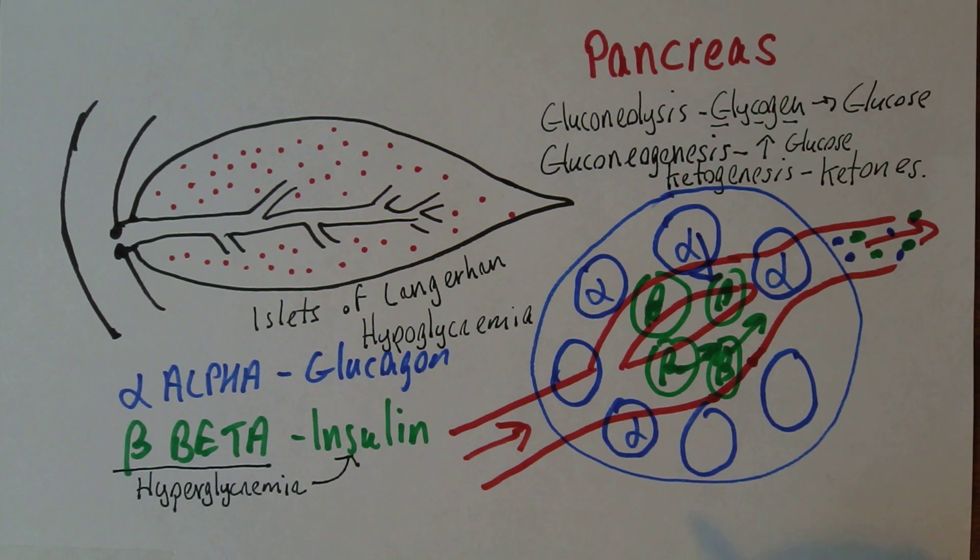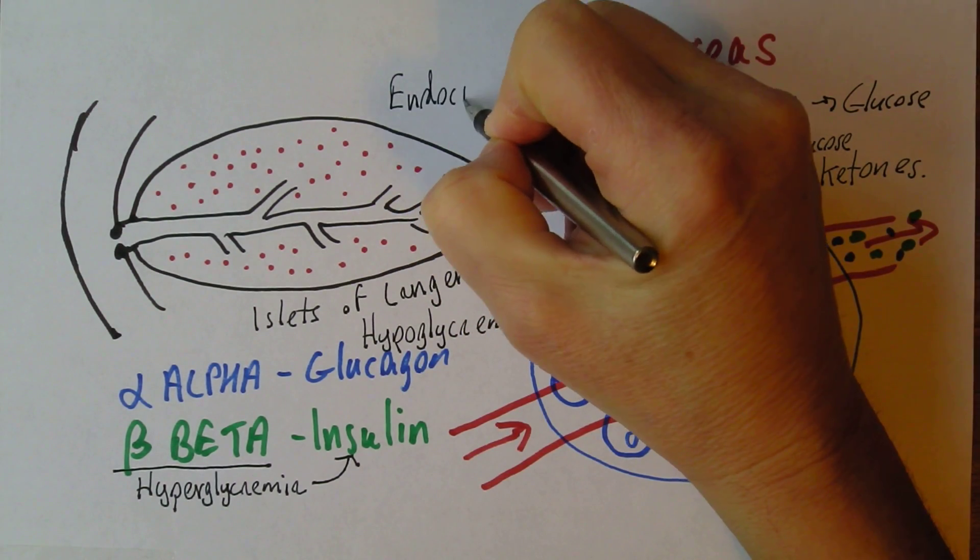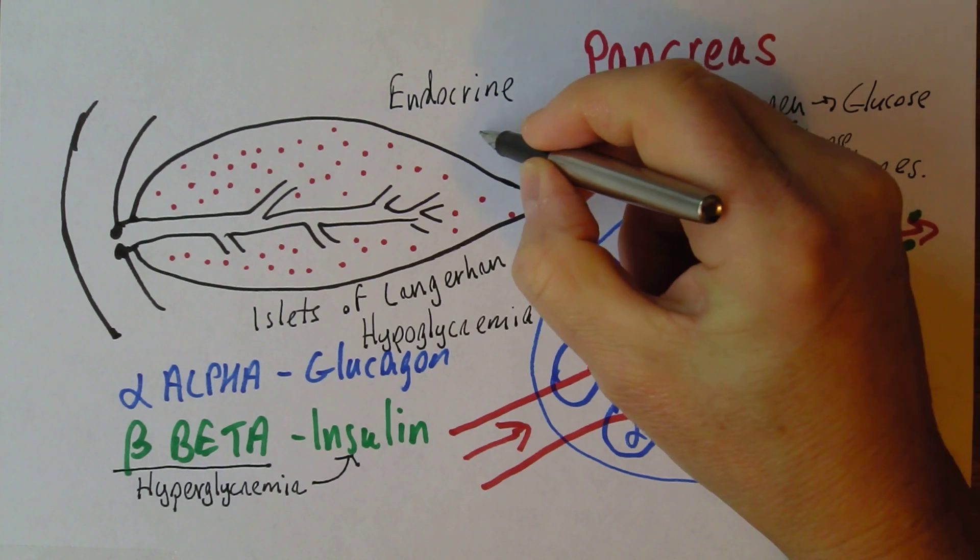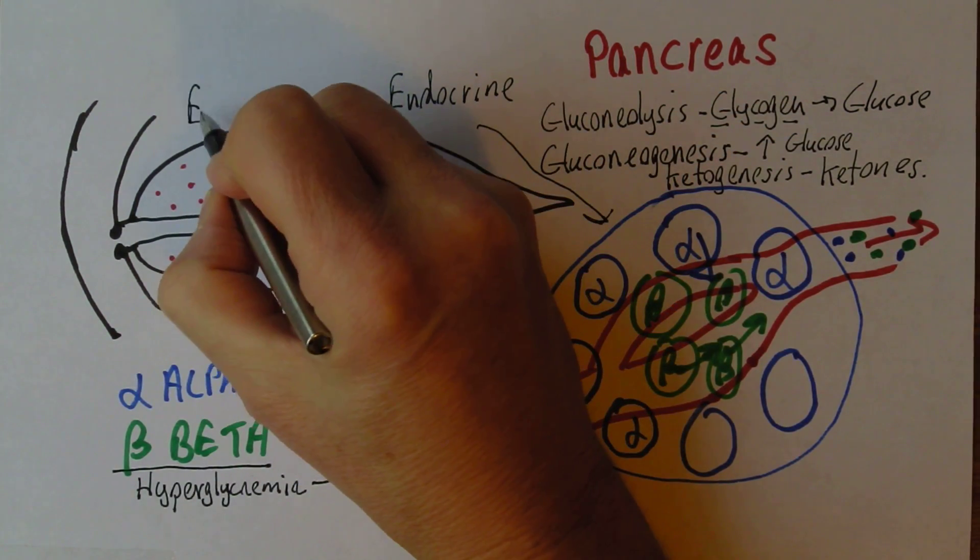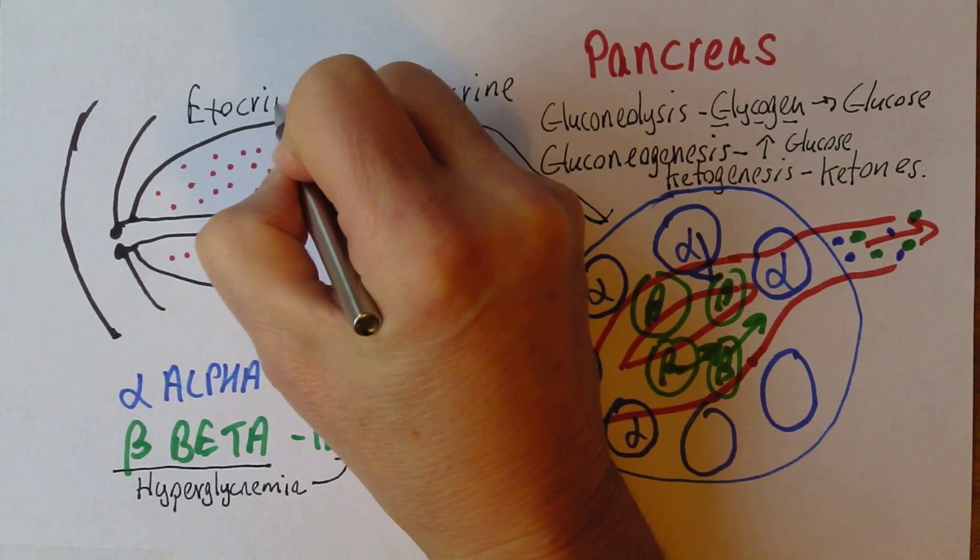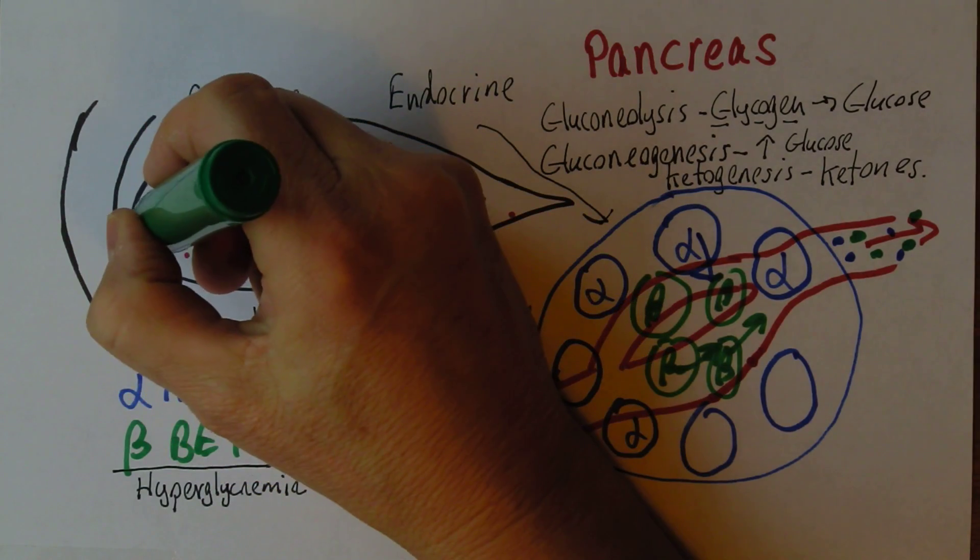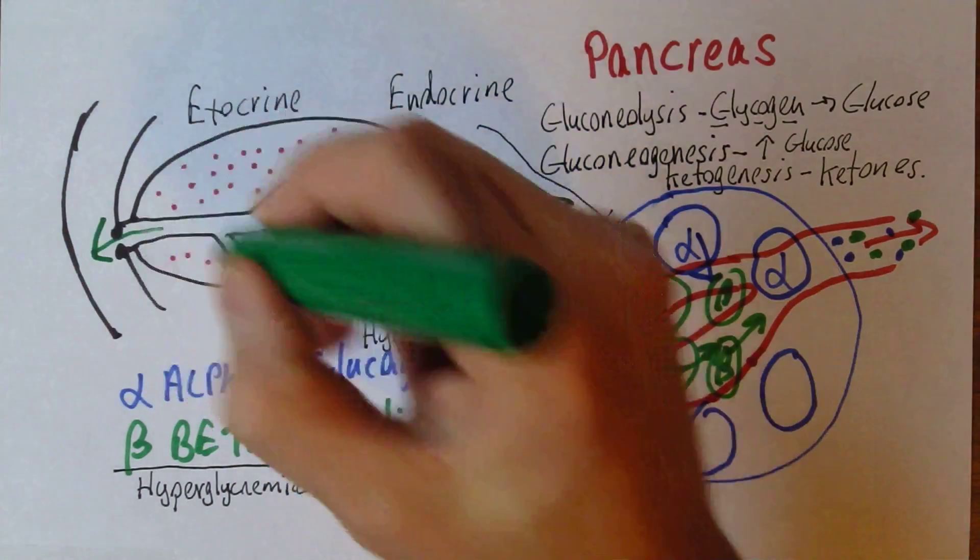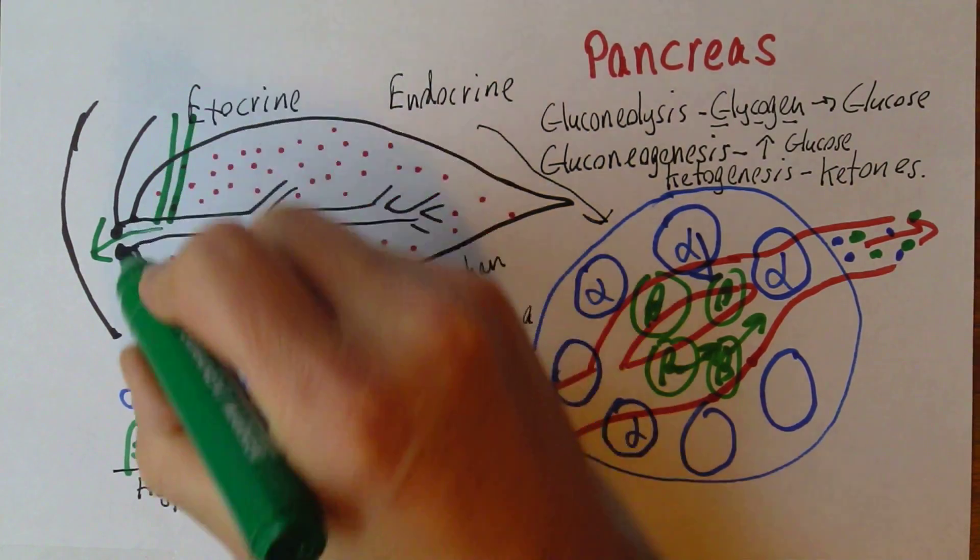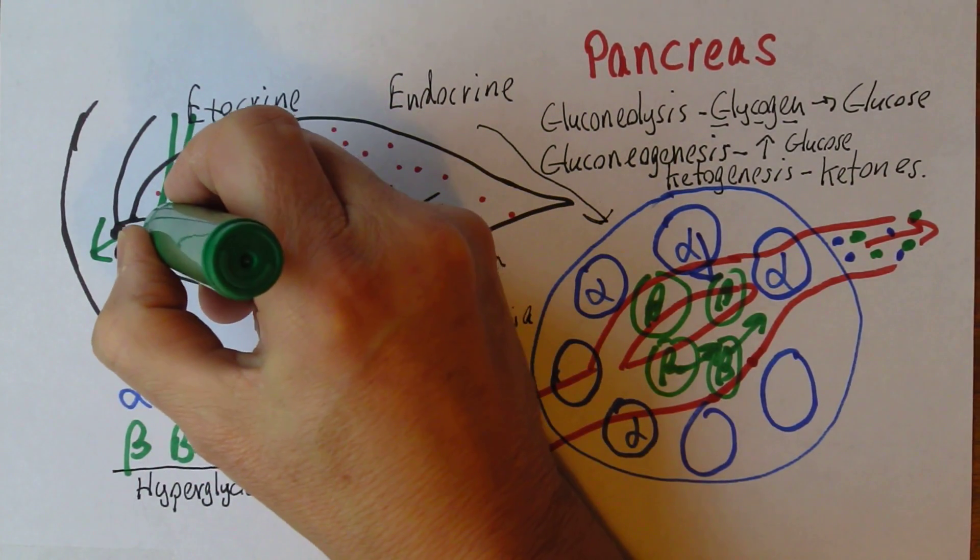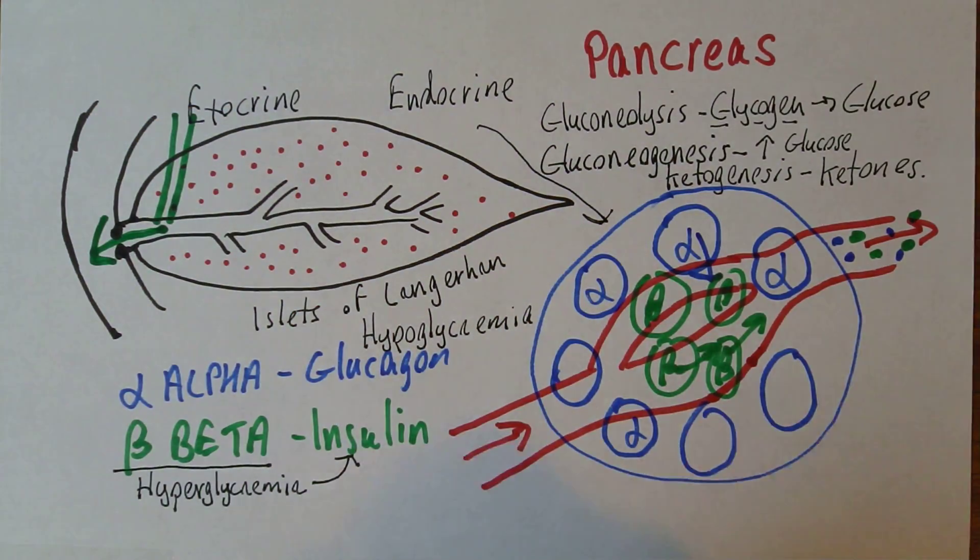So the pancreas is endocrine with its alpha and beta, but it's also exocrine because it's producing useful digestive enzymes. You might remember the bile ducts join up here as well. And this area is called the ampulla, and the whole lot goes into the duodenum to emulsify fats and carry out the digestive processes.